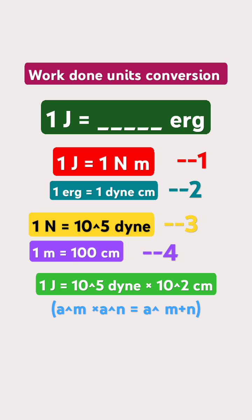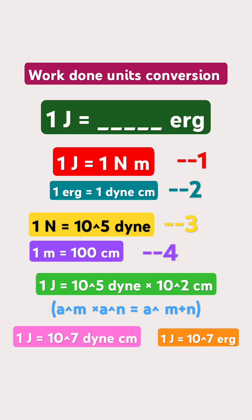Now, substitute equations 3 and 4 in equation 1. Then we get 1 joule is equal to 10 to the power of 5 dyne into 100 centimetre. From algebra, a power m into a power n is equal to a power m plus n. Then 1 joule will be equal to 10 to the power of 7 dyne centimetre. That is, 1 joule is equal to 10 to the power of 7 erg.